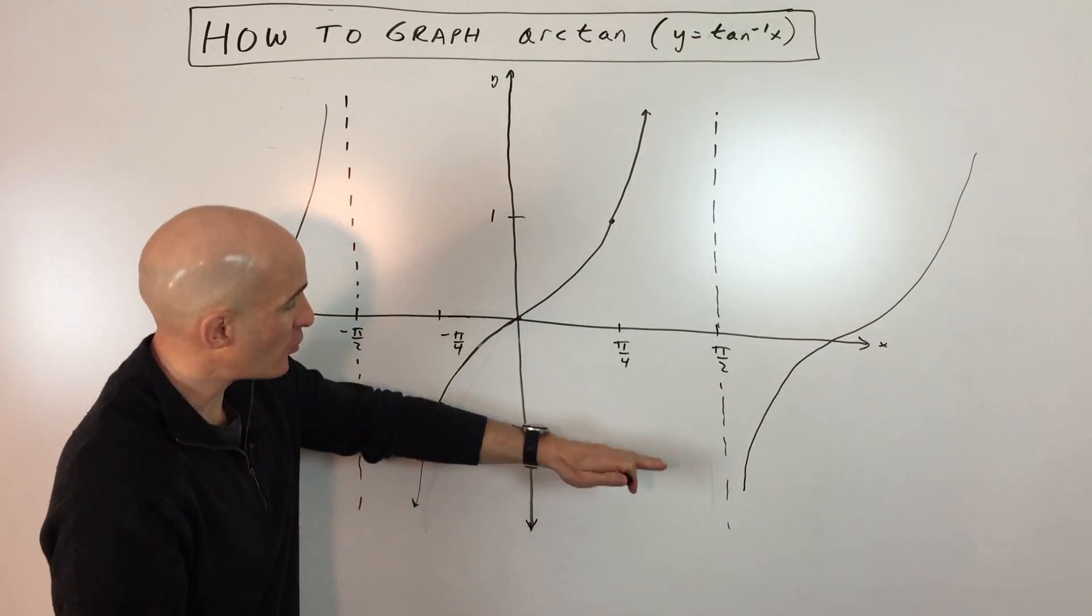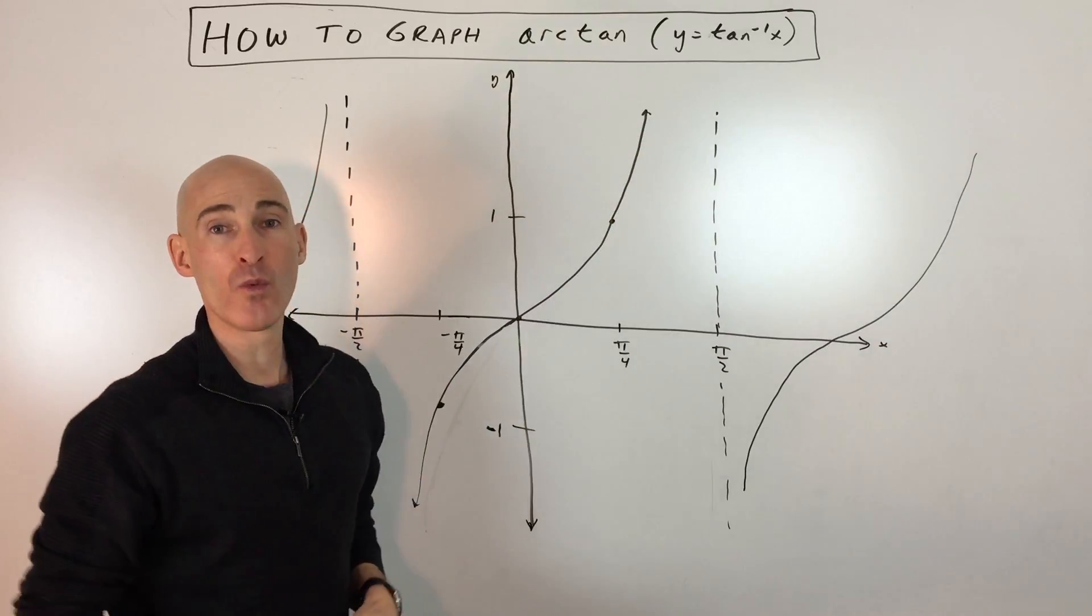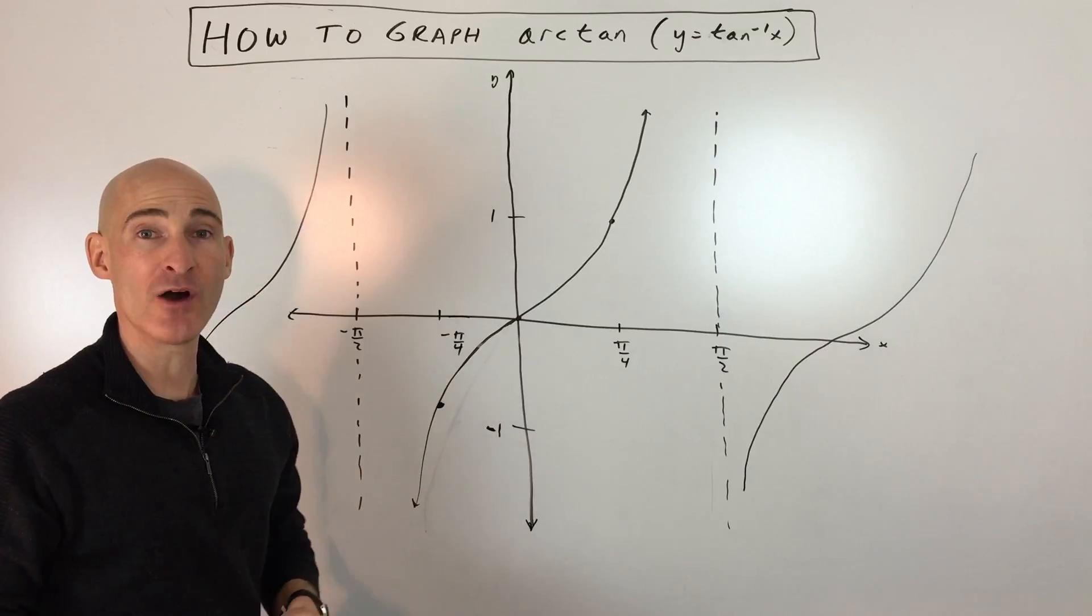But in this fashion, now the horizontal line is only going to cross the graph at most once. So that means that it passes a horizontal line test, the inverse of the graph is a function, and we can now analyze it.